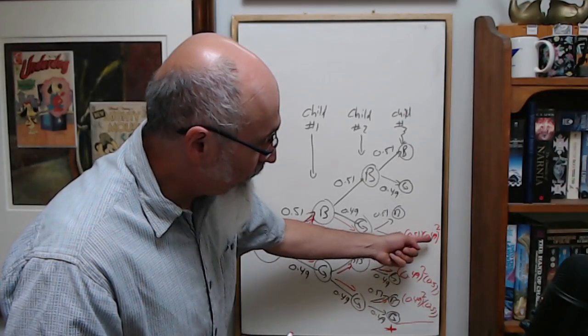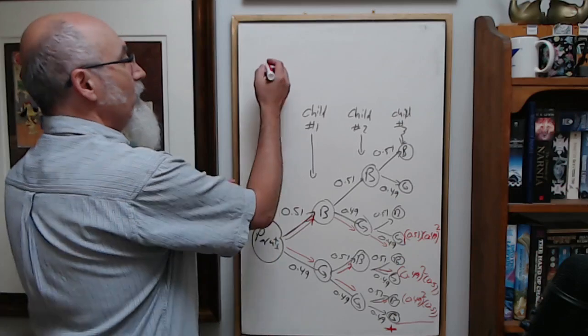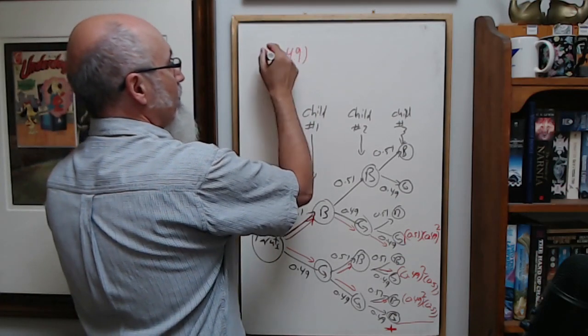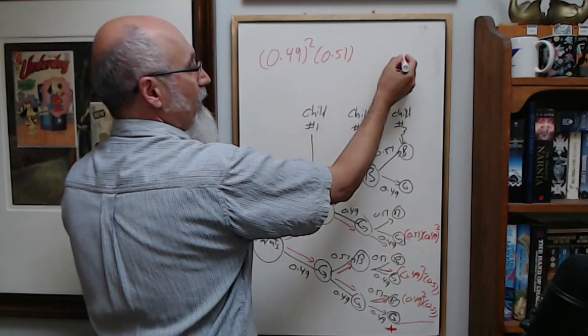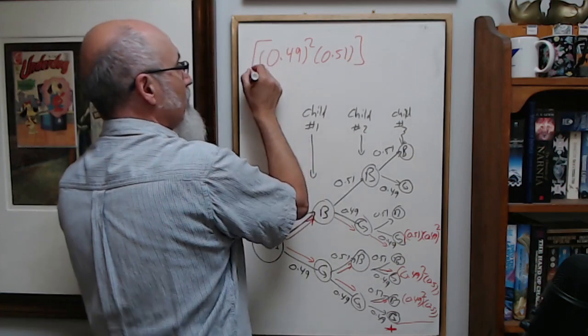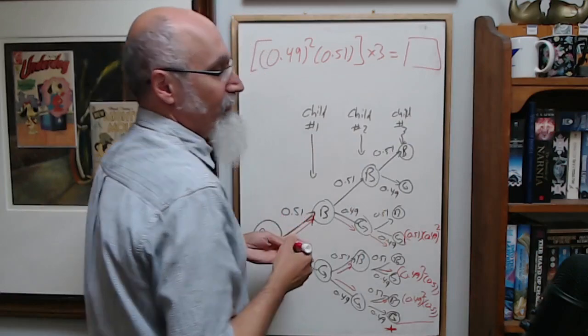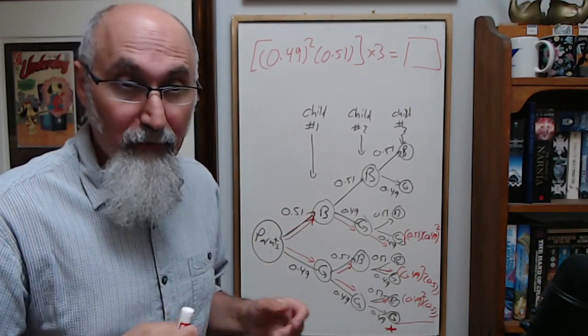So all you would do, you would go 0.49 squared times 0.51, add it together three times, or just multiply this by three and that would be your answer. Okay, is that clear? That's the way you would do this problem.